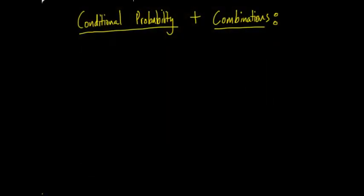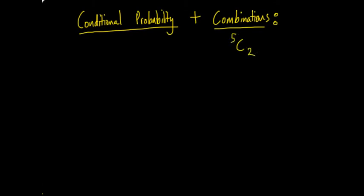Today we're going to be talking about conditional probability and combinations. You've probably done these in previous years. Conditional probability is those 'given that' probability questions, and combinations involve notation like C(5,2). Even though you've done these before, they are directly assessable in later years and often appear as part of an exam question.